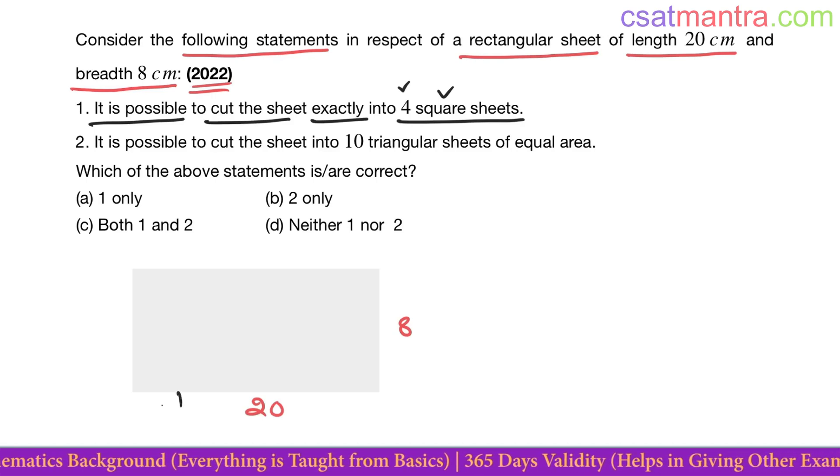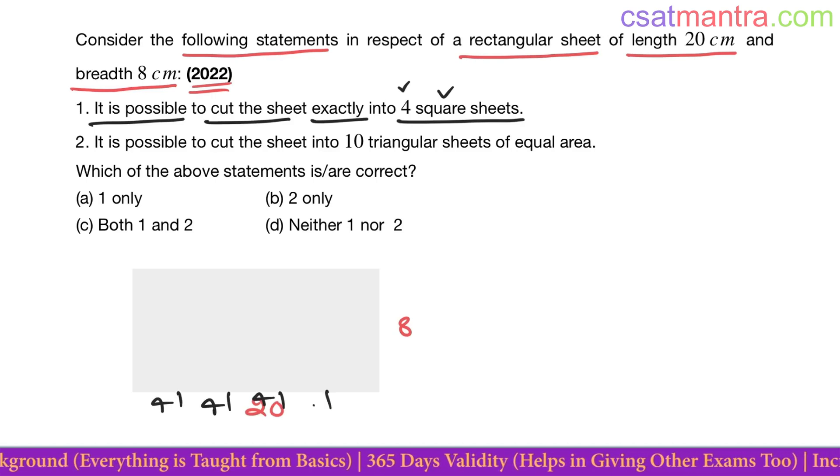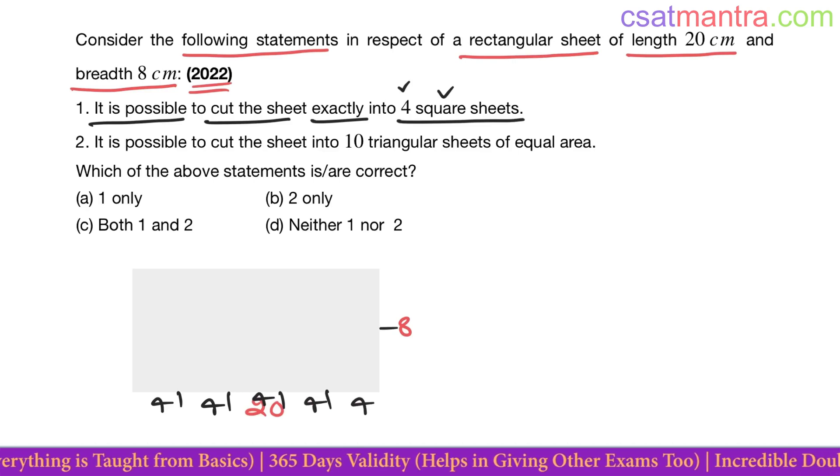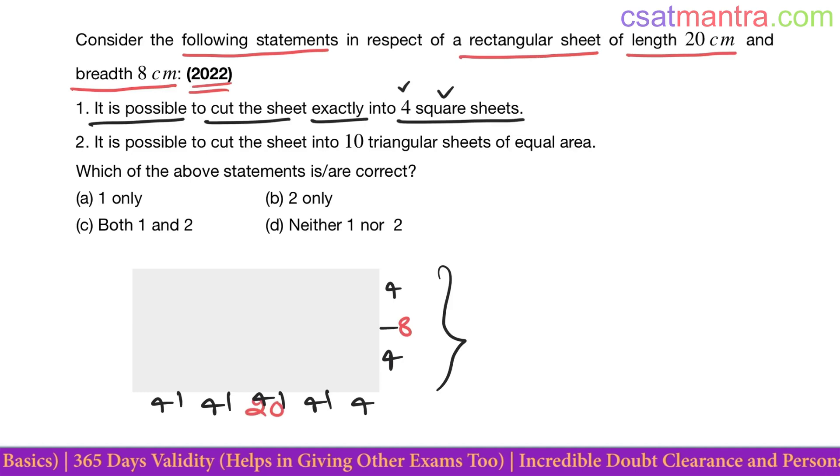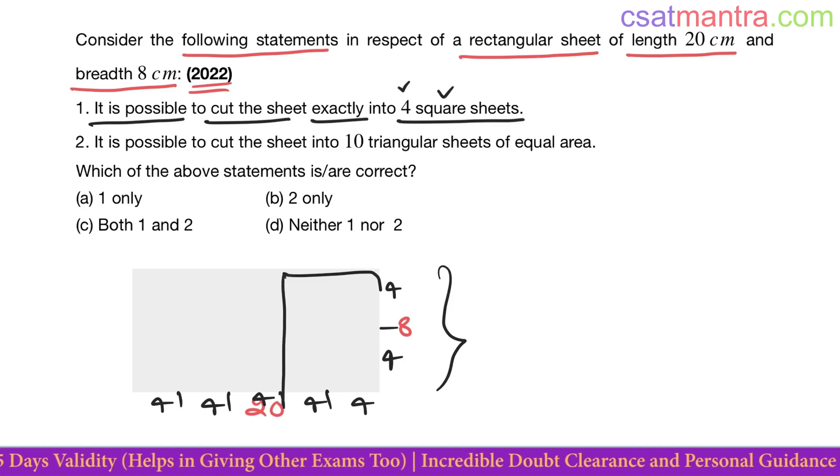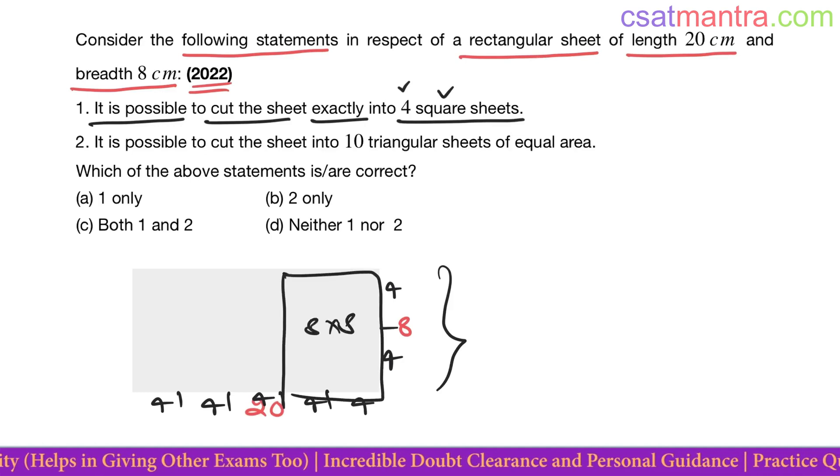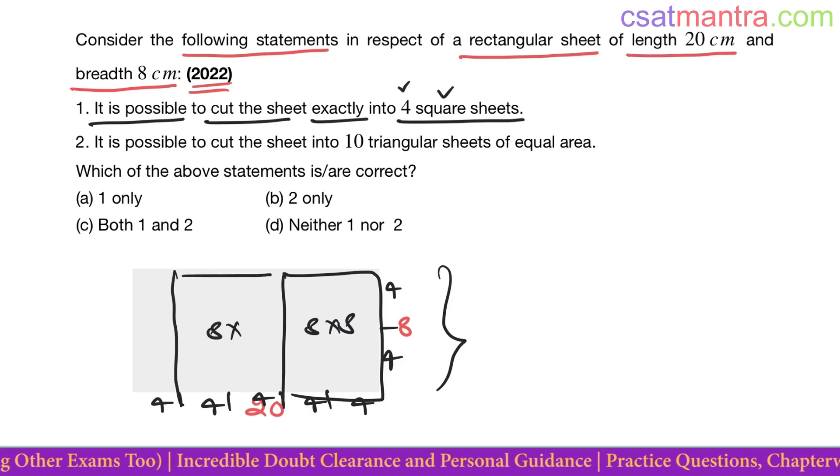You see, four, four, four, four, four, twenty. You can divide this four, four. See here, 8. So this is a square 8 by 8, 8 by 8, this is also a square 8 by 8.